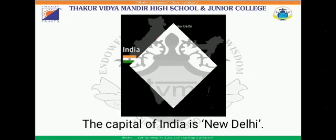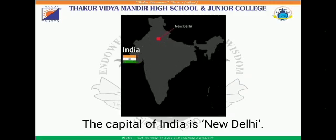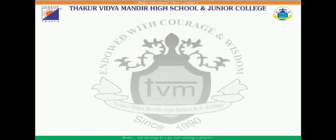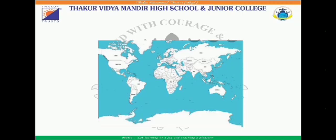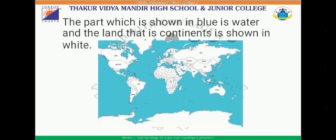The capital of India is New Delhi. This is the map of the world. The part shown in blue is water, and the land — that is, the continents — is shown in white color. With the help of this map, we are able to understand the whole world; the land and water can be seen at a glance.